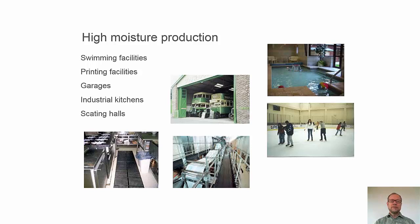There are certain places where we have even more vapor production indoors, and here are some examples, like swimming facilities, printing facilities, garages, industrial kitchens, and skating halls. Then we have to be very careful with the moisture production indoors.